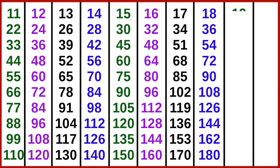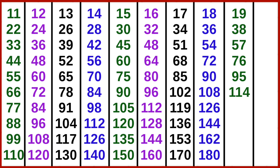19 ones are 19, 19 twos are 38, 19 threes are 57, 19 fours are 76, 19 fives are 95, 19 six are 114, 19 sevens are 133, 19 eights are 152, 19 nines are 171, 19 tens are 190.